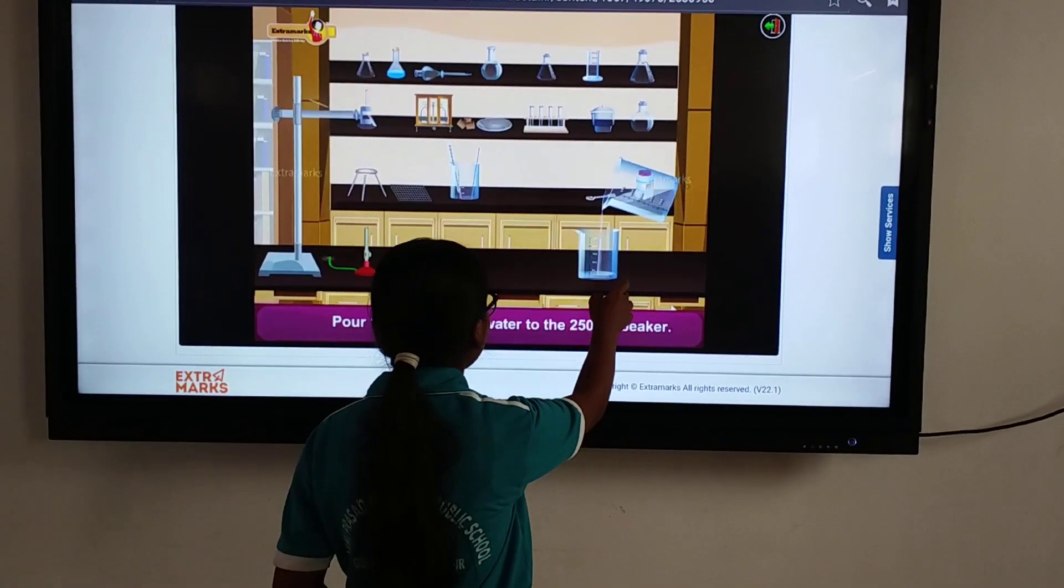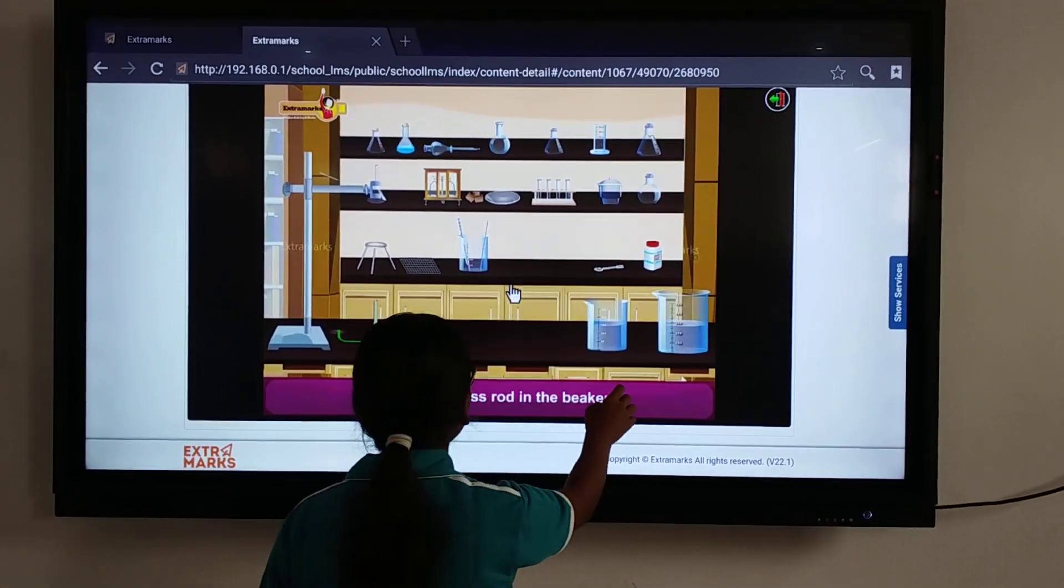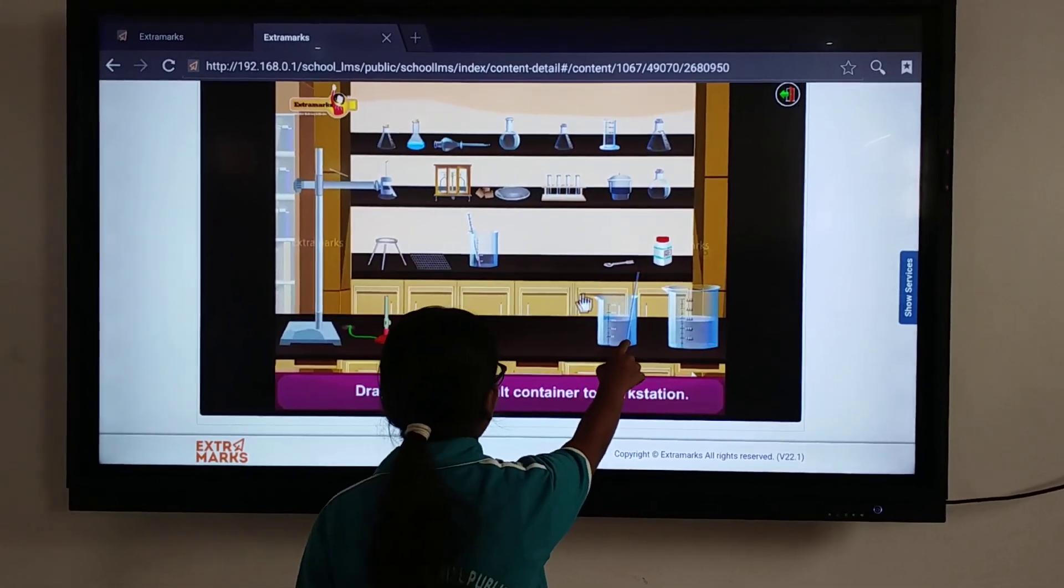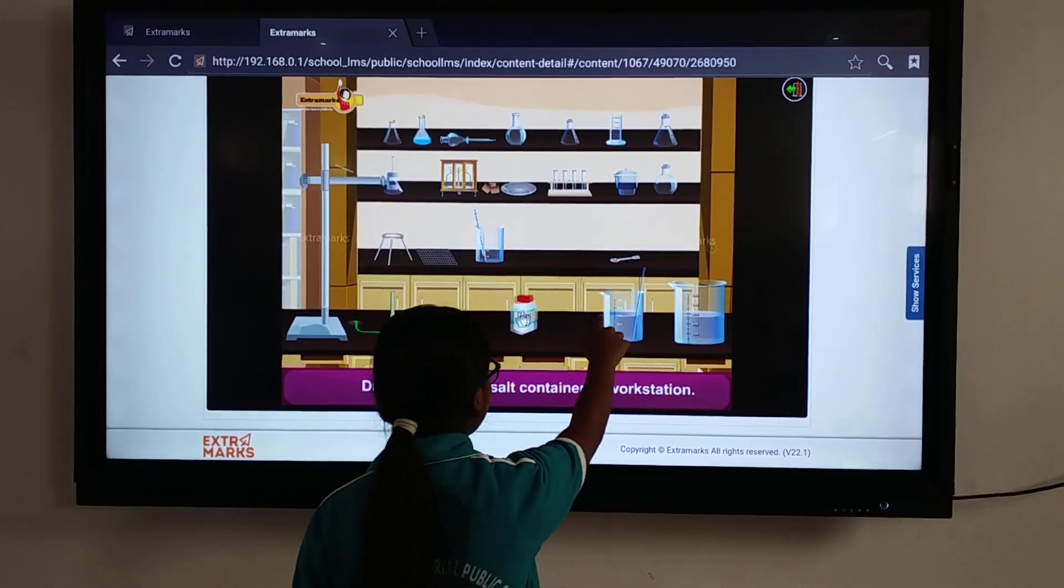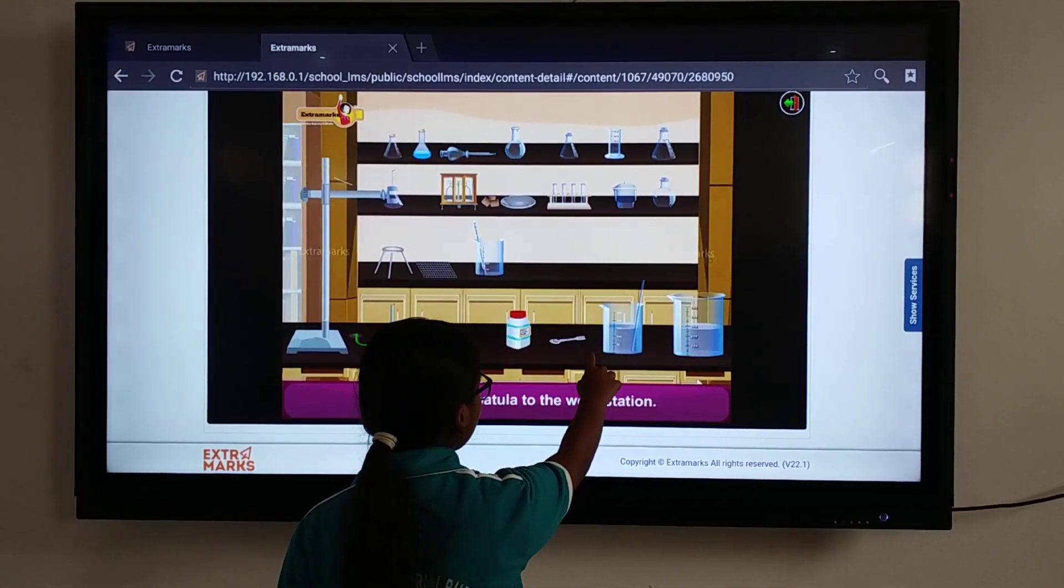Add 150 ml of water to a 250 ml beaker and put a glass rod in the beaker. Here is a common salt container that we will use for the experiment.